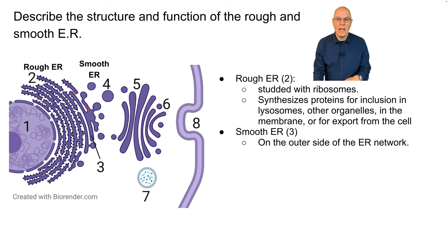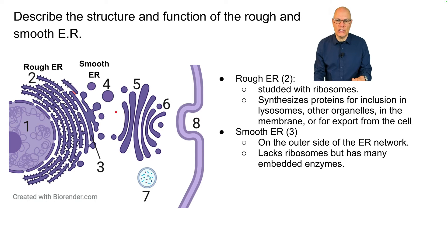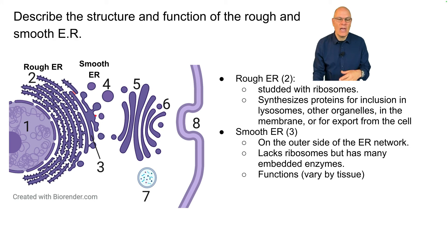The smooth ER is on the outer side of the ER network, always towards the Golgi, and it lacks ribosomes — but that doesn't mean there's nothing in that membrane. It has many membrane-embedded enzymes.